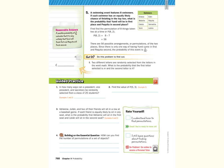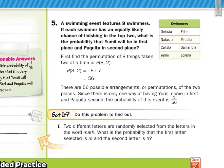So as we move on now to our guided example five, a swimming event features eight swimmers. If each swimmer has an equally likely chance of finishing in the top two, what is the probability that Yumi will be in first place and Paquita in second place? Well, the first step is going to be finding how many different outcomes we can have. So first find the permutation of eight things taken two at a time, or P(8, 2). That's eight times seven, so that's 56 different arrangements or permutations of the first two places. Since there's only one way of having Yumi come in first and Paquita coming in second, the probability of this event is 1/56.